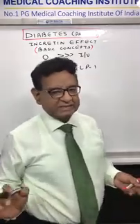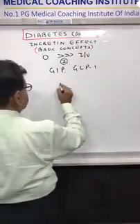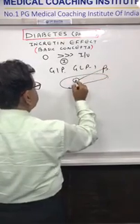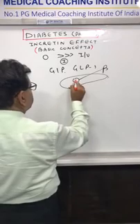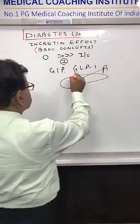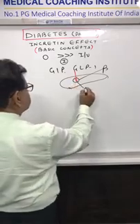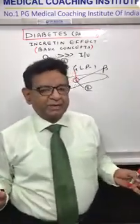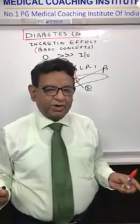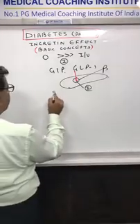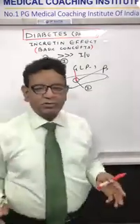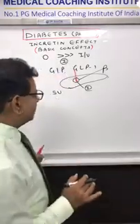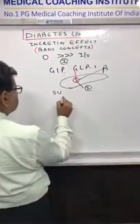From the intestinal cells, these hormones go to the pancreas and stimulate the beta cells. Beta cells have preformed insulin, and these hormones cause the release of this preformed insulin — which is in the form of pro-insulin — from the beta cell. If you recall your pharmacology, the same action is done by sulfonylureas: they also go to the pancreas and cause release of preformed insulin.